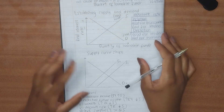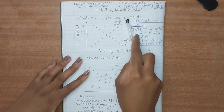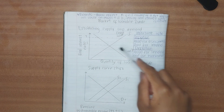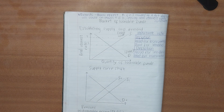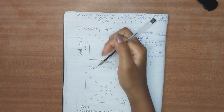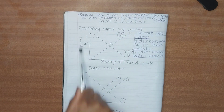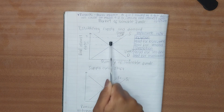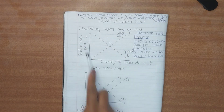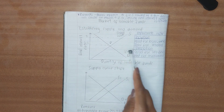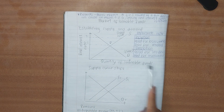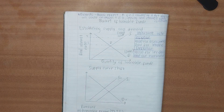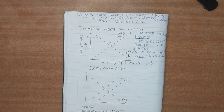We've established that the suppliers of loanable funds are households and the demanders are firms. Where supply and demand meet, we get the equilibrium real interest rate and equilibrium quantity of loanable funds. In this market: suppliers are households, demanders are firms, the price is the real interest rate, and quantity is the quantity of loanable funds. The laws of demand and supply still apply — the higher the price, the lower the demand.